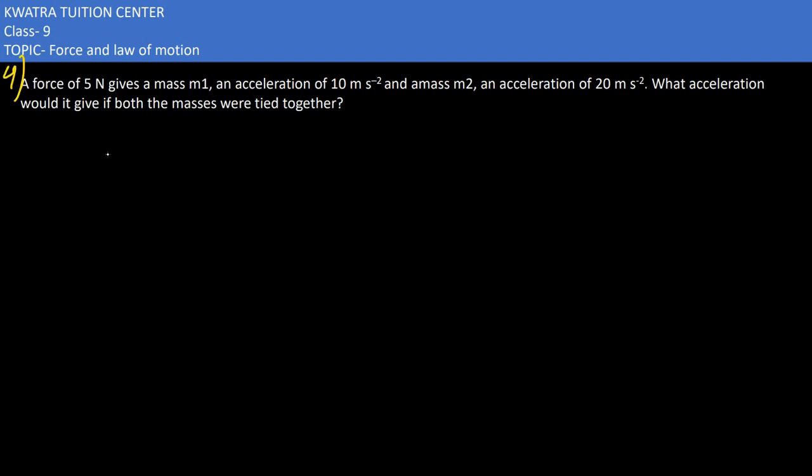Now moving to the 4th part of it, we have a force of 5 N which gives a mass M1 an acceleration of 10 m per second square, and mass M2 an acceleration of 20 m per second square. What acceleration would it give if both the masses were tied together?